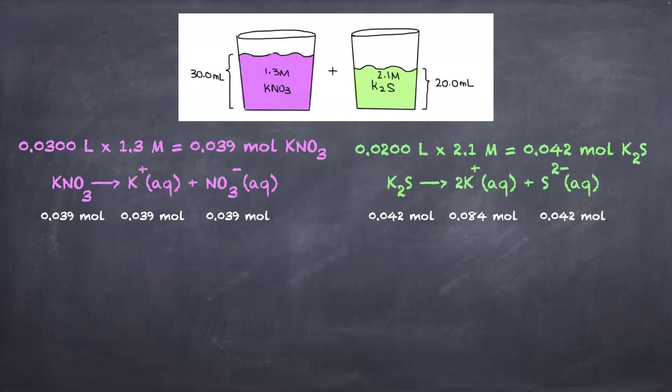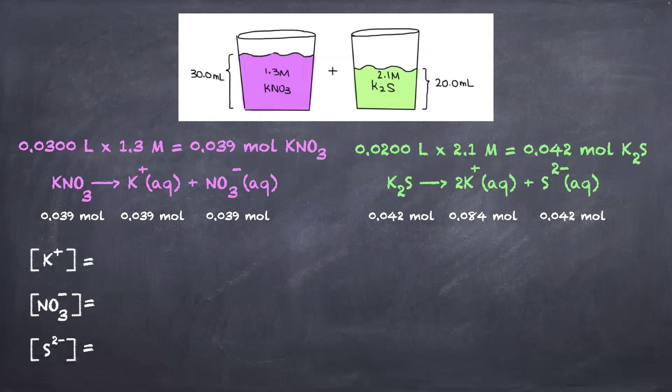For K₂S, if its moles are 0.042, then K⁺ would be twice as much because of the subscript 2 — twice as much K⁺ is being produced, while only one S²⁻ is produced. So the moles of S²⁻ will be 0.042. Then we can find the concentration of each ion.